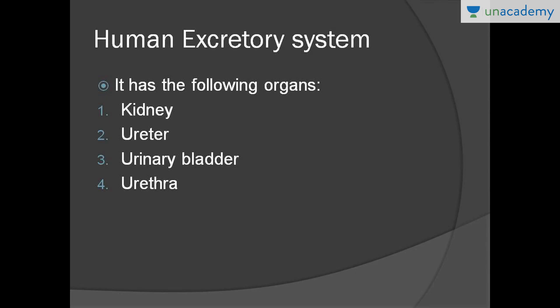We'll start with the basics of the human excretory system and what organs constitute it. We have the kidney, ureter, urinary bladder, and urethra. I'll be explaining each of these organs in brief in the upcoming slides.